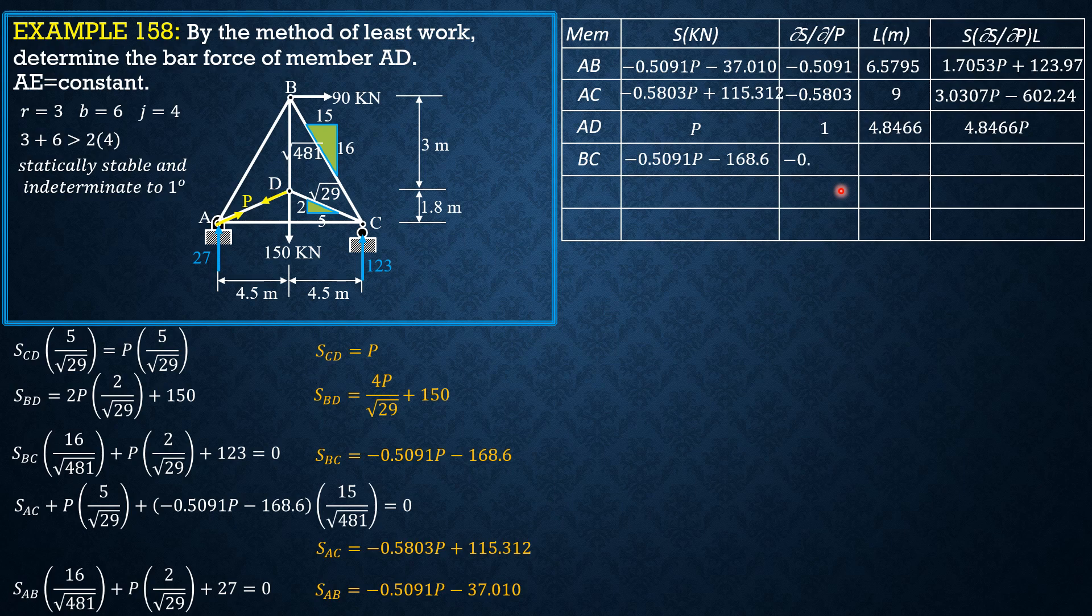Then BC, negative 0.5091P minus 168.6. Partial derivative negative 0.5091, then the length is same as AB, 6.5795. The product 1.7053P plus 564.75.